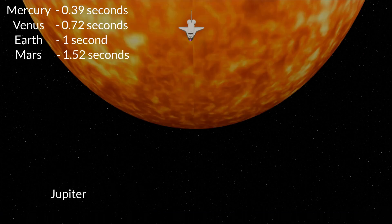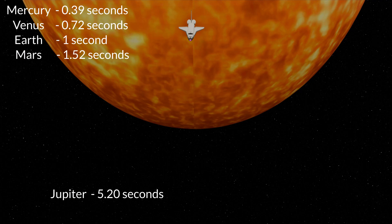Next up is Jupiter, which takes 5.20 seconds to travel to from the Sun.